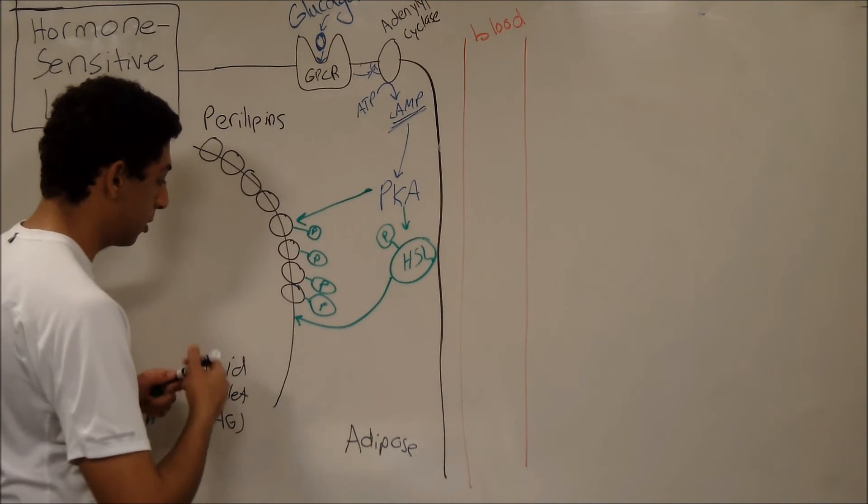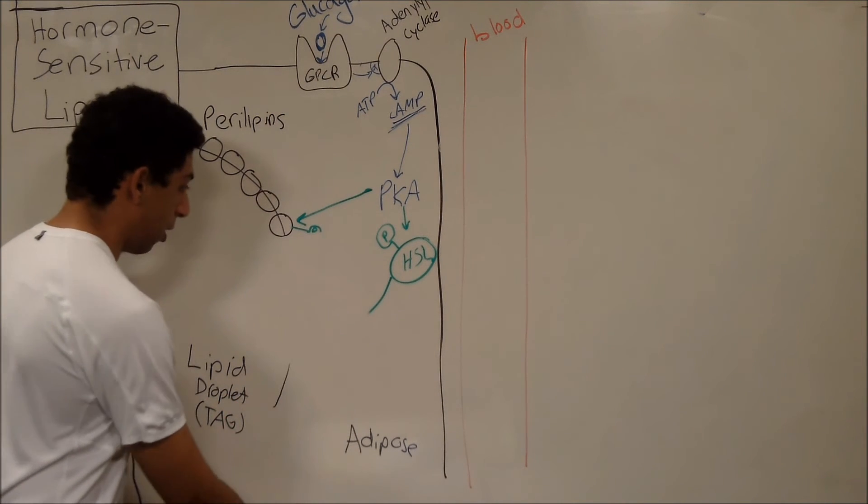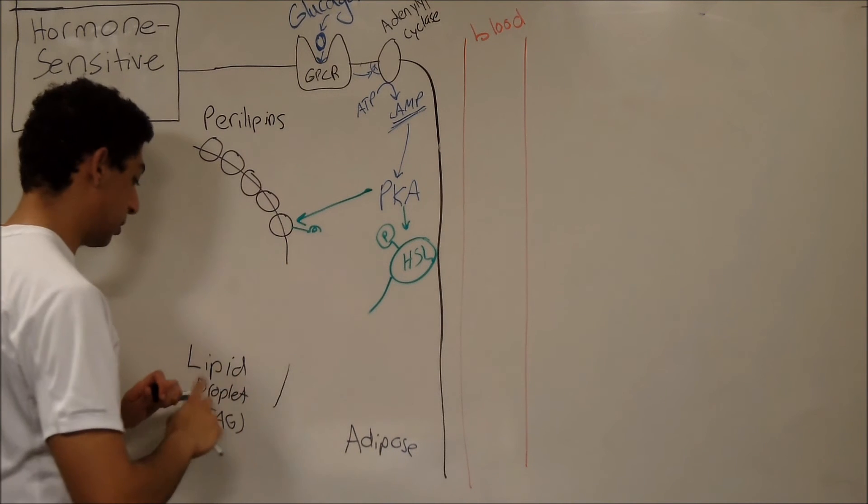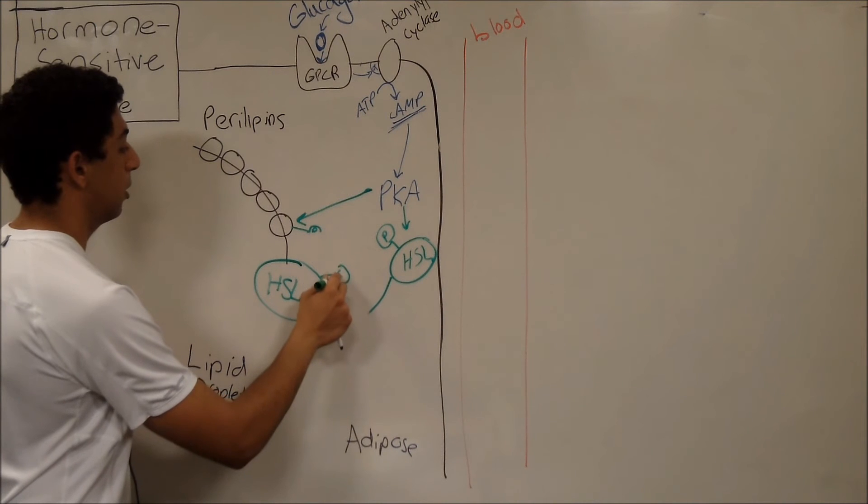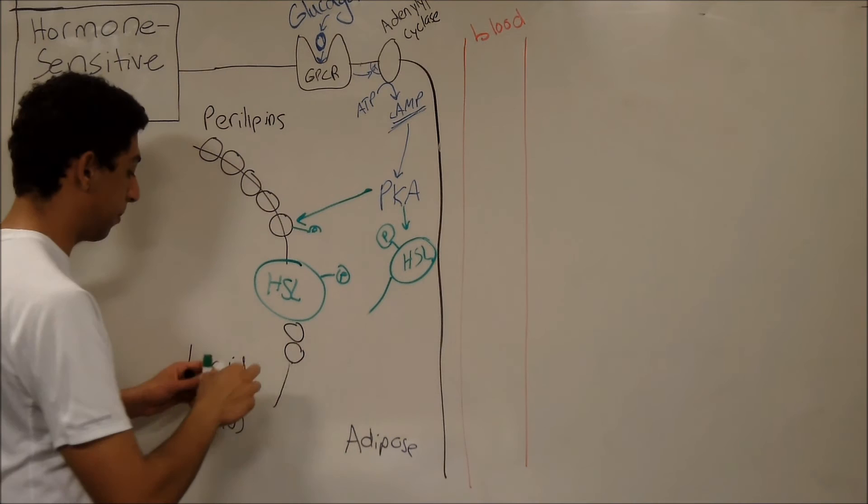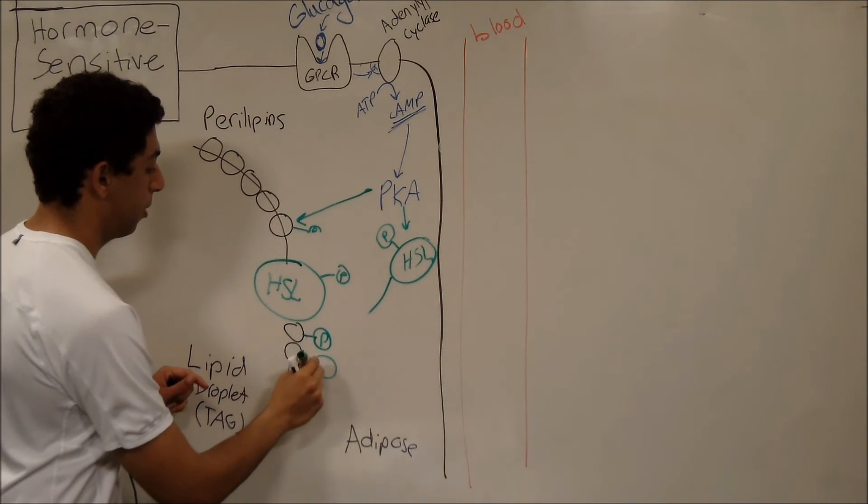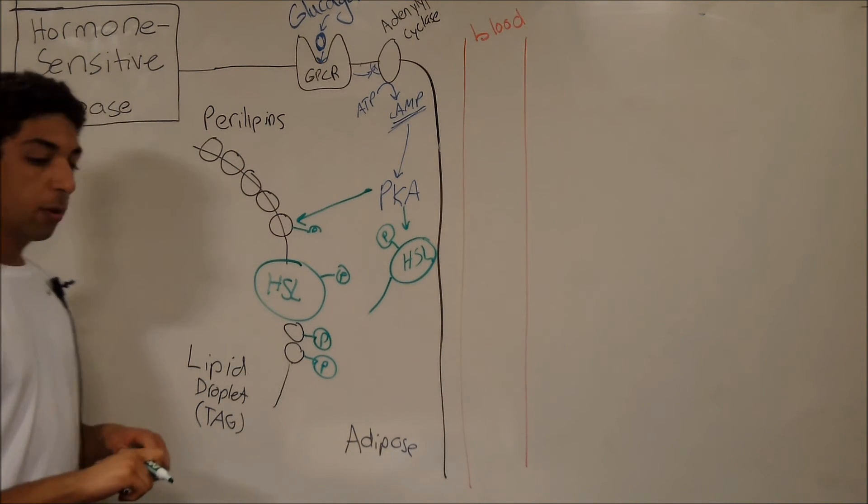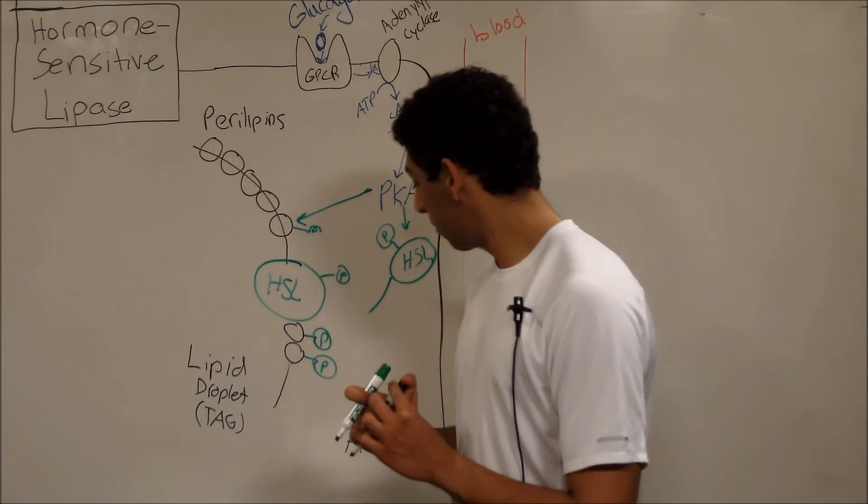So if we were to continue this, let's see, if we were to redraw this, we would now have hormone-sensitive lipase attached to the lipid droplet, and it's still phosphorylated. And it's surrounded by perilipins that have now let it in. That is my masterful artwork. All right, so now hormone-sensitive lipase is attached to the lipid droplet.